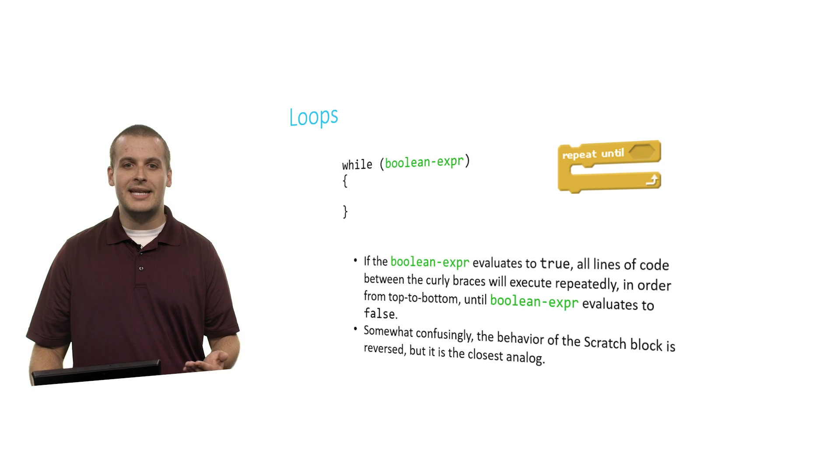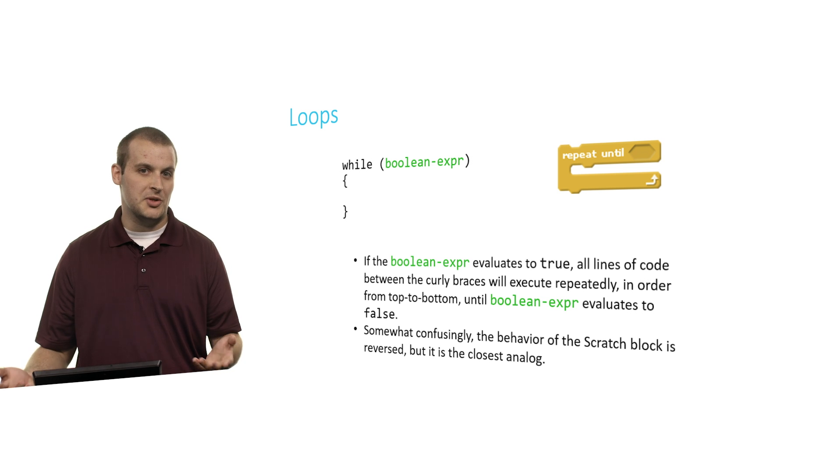Now, while loops are not always infinite. We can also replace the Boolean expression with something a little more useful than just true. So here's another example. While, and then some Boolean expression, and then curly braces. That's pretty much analogous to repeat until from Scratch, although in a second I'll explain the difference. So in C, if the Boolean expression inside of the while loop evaluates to true, the lines of code between the curly braces will execute repeatedly, over and over and over, until the Boolean expression evaluates to false.